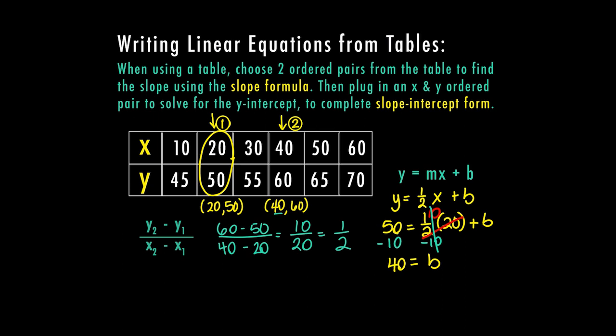So that means whenever my x is zero, my y is 40. So I'm going to go up here and I'm going to fill in my equation in slope-intercept form. So y equals one-half was my m for slope times x plus 40 is my b or my y-intercept. So this is my final equation that goes with this table.